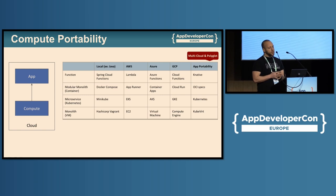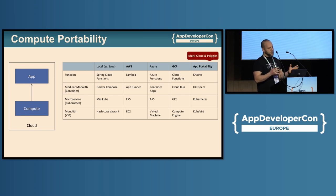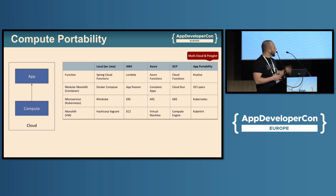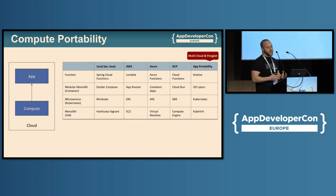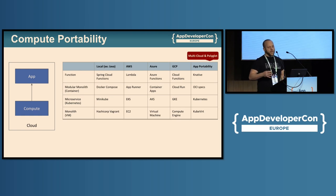The first thing is compute portability. You may have applications of different granularity — functions, microservices, different types of monolith — and you can run them locally and on specific clouds. From a portability and cloud agnostic point of view, your best options are containers with the Open Container Initiative spec or Kubernetes, which will give you the best portability.